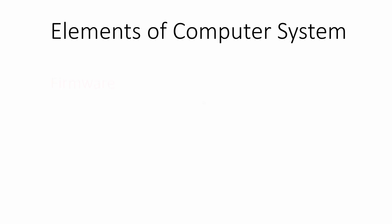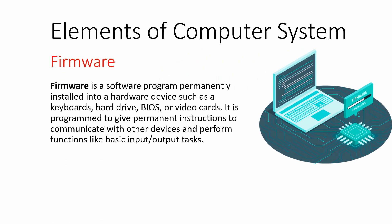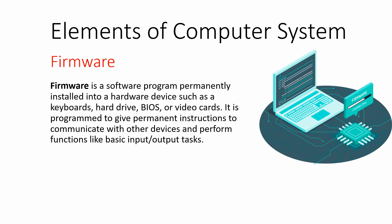Another important element of a computer system is firmware. Firmware is a software program permanently installed into a hardware device such as a keyboard, hard drive, BIOS, or video card. It is also known as device drivers. They are programmed to give permanent instructions to communicate with other devices and perform the basic input/output functions. These types of software are installed during the manufacturing of the computer system.